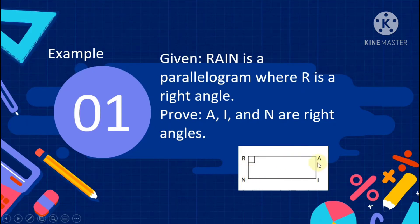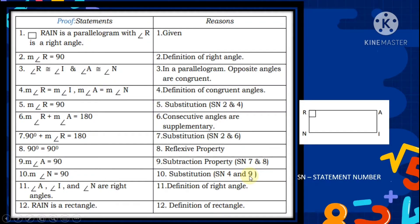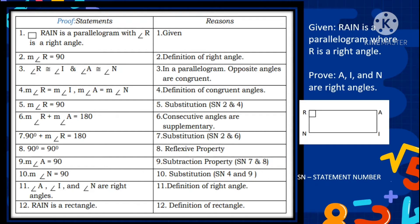We need to prove that A, I, and N are right angles. In the statements and reasons table: Statement 1 — R, A, I, N is a parallelogram where R is a right angle; Reason: Given. Statement 2 — measure of angle R is 90 degrees; this is a right angle.